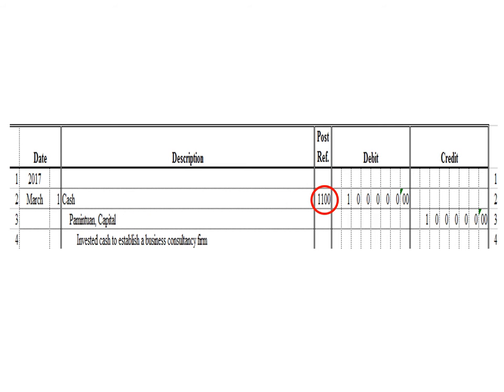Remember what I mentioned in our exercises in journalizing: we supply the data in the posting reference column in our journal only after we have posted the transaction. After posting the debit entry in the cash ledger, we write the posting reference 1100, the account code for cash. The posting reference in our journal pertains to the account code of the debit or credit entry.